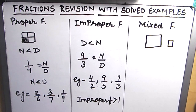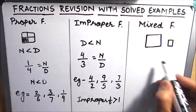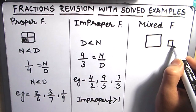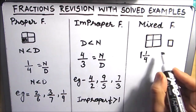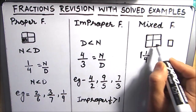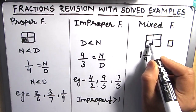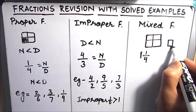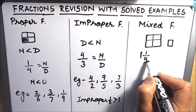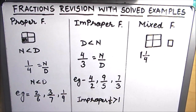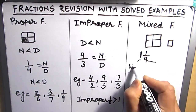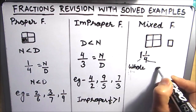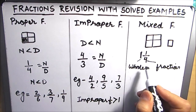Now let's move on to mixed fractions. In a mixed fraction we represent the whole part and the fraction part separately. For example, the mixed fraction for this picture is 1 and 1 fourth — the whole part consists of 4 parts, and 1 part of the 4th part is shaded. So 1 and 1/4 is the mixed fraction for this picture, where we are representing the whole part and the fraction part separately.